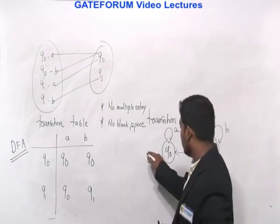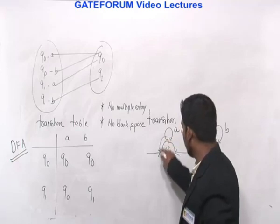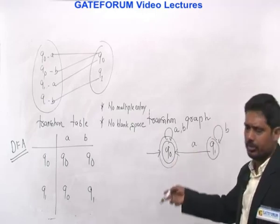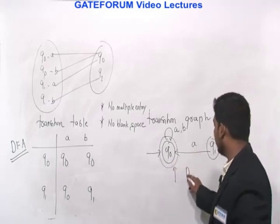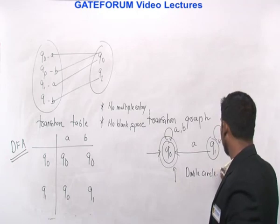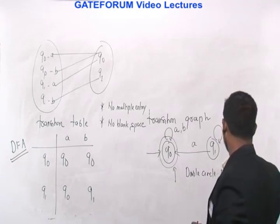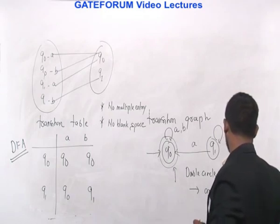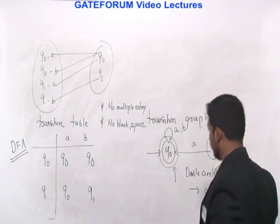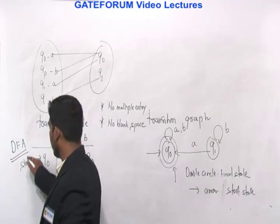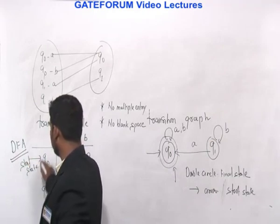Two more subtle requirements: there must be a start state and there must be a final state. A double circle is the convention for a final state, and an arrow indicates the start state. Books vary in their conventions — some use an arrow for the start state and a star or double circle for the final state.